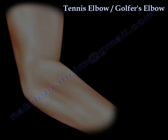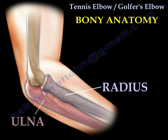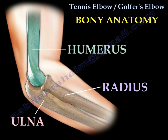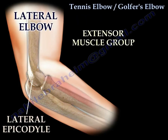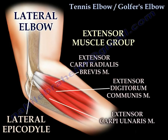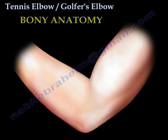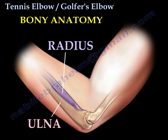Tennis and golfer's elbow — bony anatomy of the elbow. Here you can see the radius, the ulna, and the humerus. On the lateral side of the elbow, the lateral epicondyle gives origin to the extensor muscle group, specifically the extensor carpi radialis brevis.